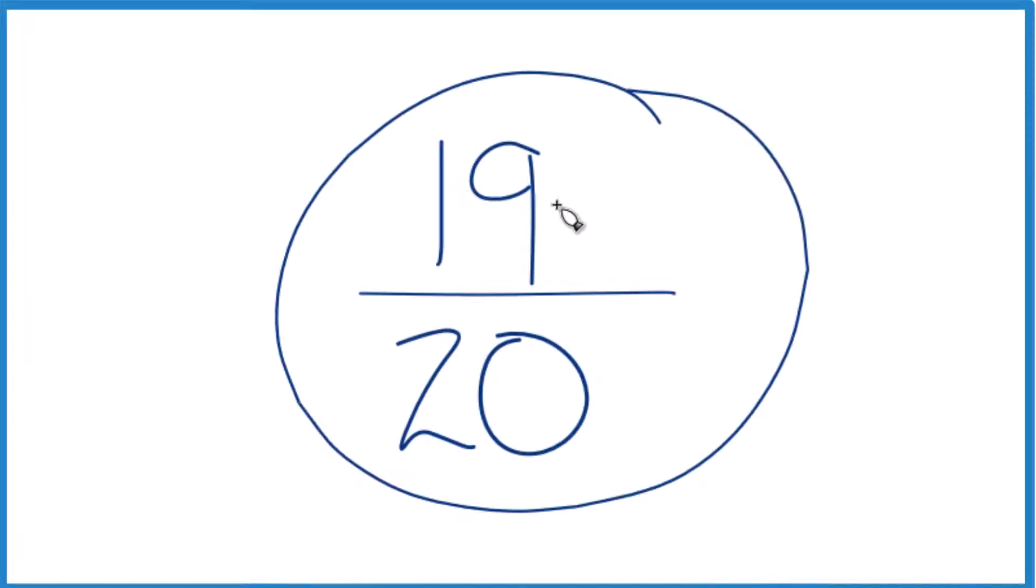Let's convert 19 twentieths, the fraction 19 over 20, to a decimal. Basically, you want to take 19 and divide it by 20. Since 19 is less than 20, the number should be less than 1, but they're pretty close, so it'll be close to 1.